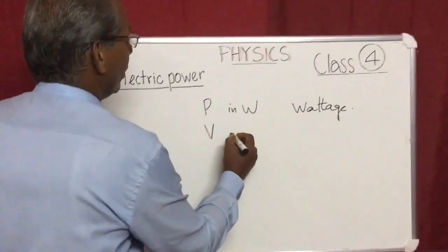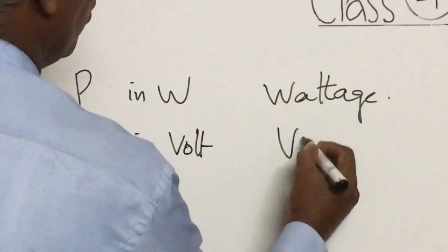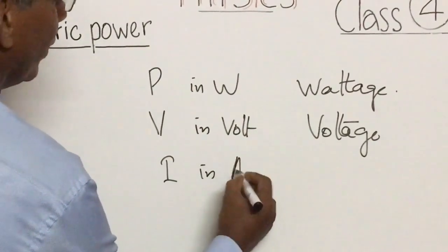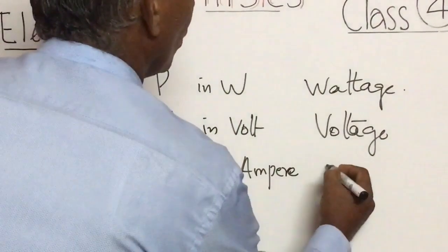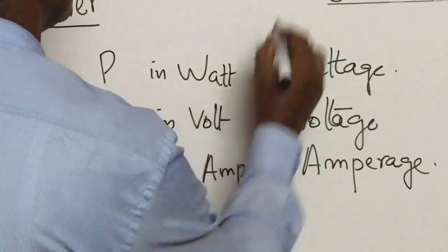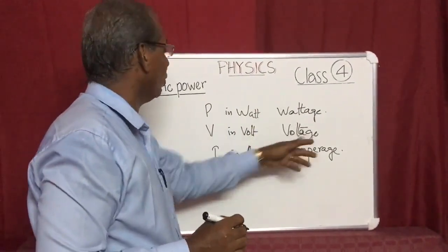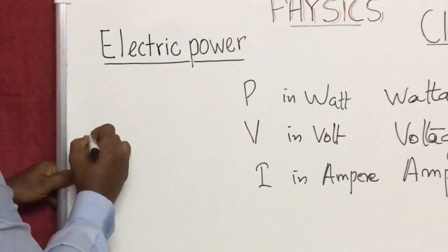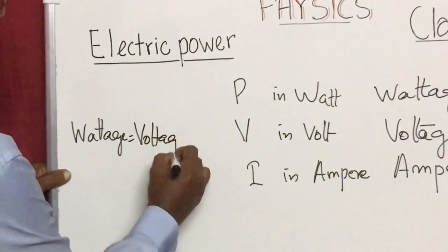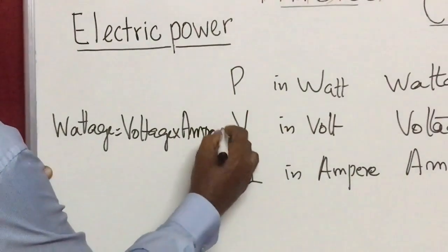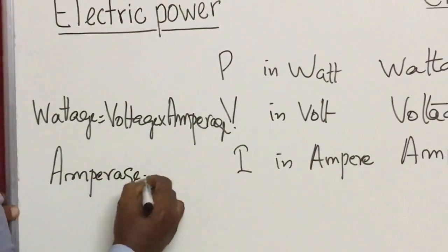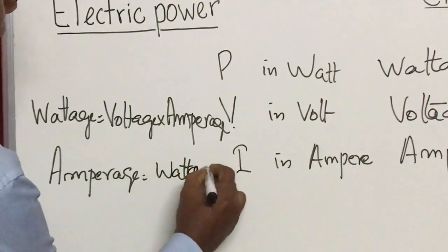Voltage is V in volts, and I in amperage. So we can write the equation: wattage is equal to voltage into amperage. From this we can write: amperage is equal to wattage divided by voltage.